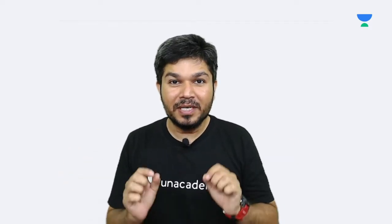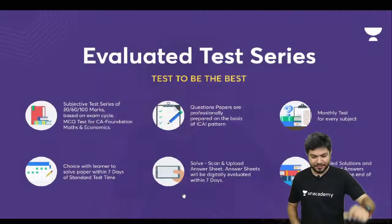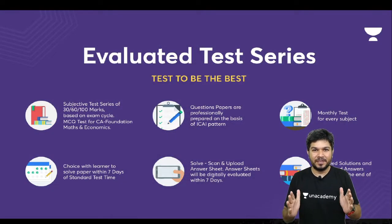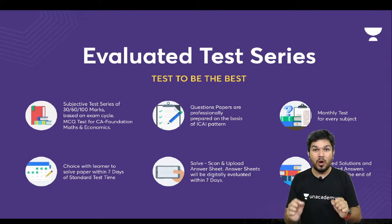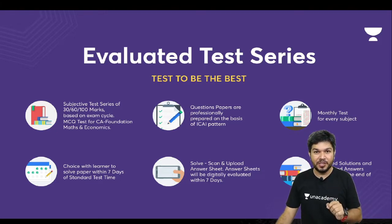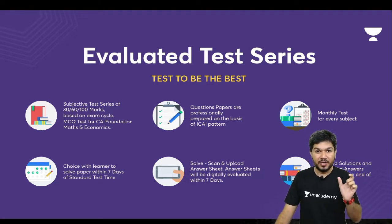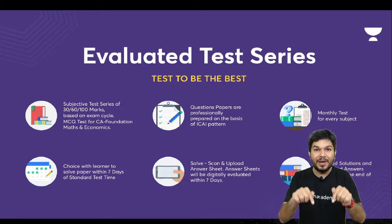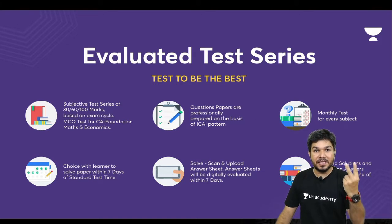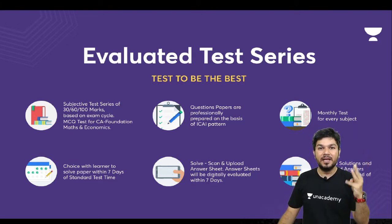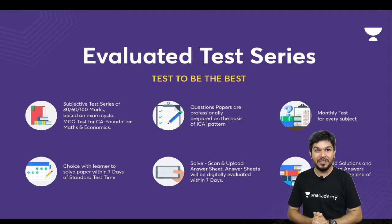Before that, let me show you a new feature launched at Unacademy called the UA Light subscription. It's about an evaluated test series. Many students study but, without writing practice, they are not able to present well in examinations. For those who want writing practice — and according to me it's a must — we have a subscription only for evaluated test series. Under UA Light subscription you don't get lectures; you just get evaluated tests: 30-marker, 60-marker, and full 100-marker tests, conducted on a monthly basis.